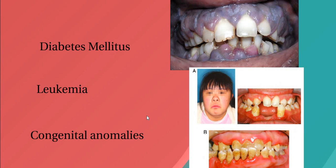Acute necrotizing gingivitis is very rarely seen except in cases of primary or secondary immune suppression, Down syndrome, or severe malnutrition. In this case, the child may complain of severe pain and discomfort while eating, and also have malodour or fetid breath.